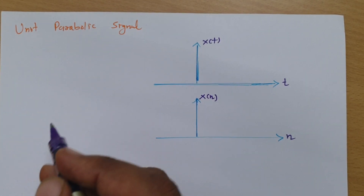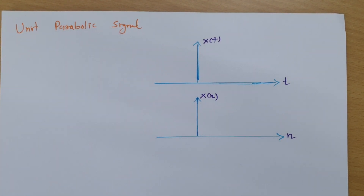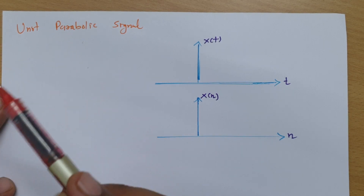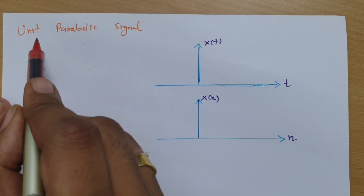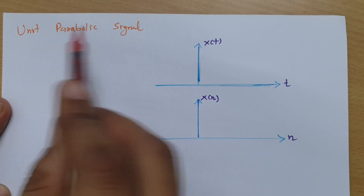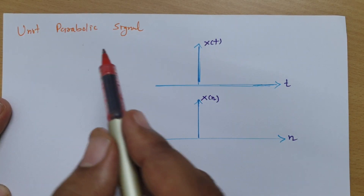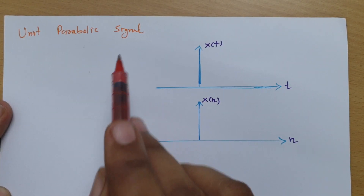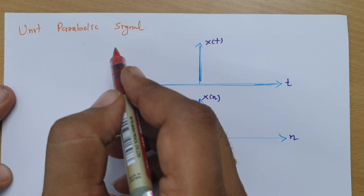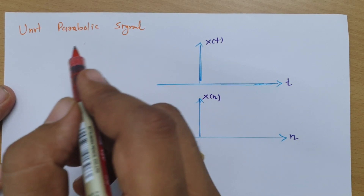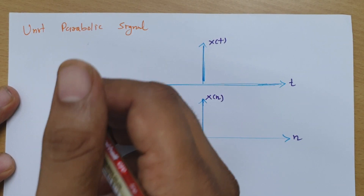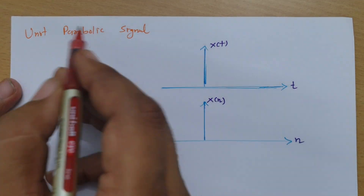Welcome to the signal and system lecture series. In this session, I will explain the unit parabolic signal. First, I will cover the basic definition and how we can define it by a function. Then we will see the graphical representation, and finally I will explain the relationship of the unit parabolic signal with the ramp signal and the unit step signal. Let us begin with the function of the unit parabolic signal.